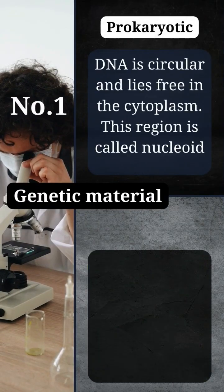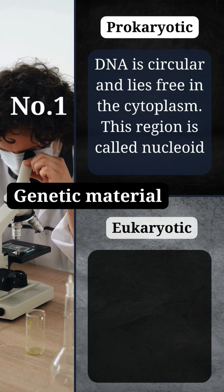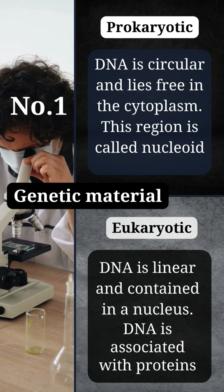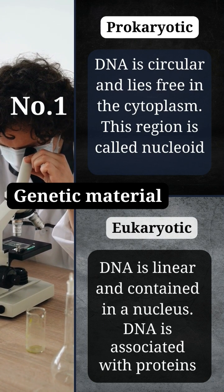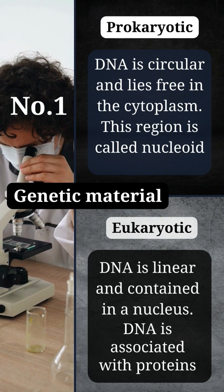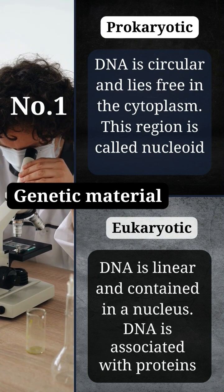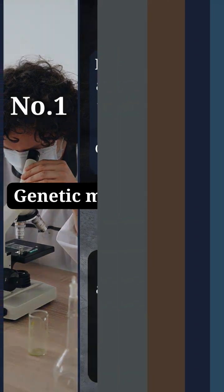Prokaryotic DNA is circular and lies free in the cytoplasm. Eukaryotic DNA is linear and contained in a nucleus. DNA is associated with proteins.